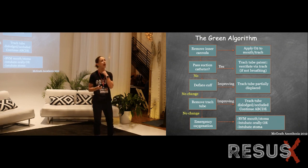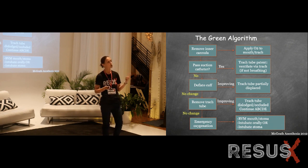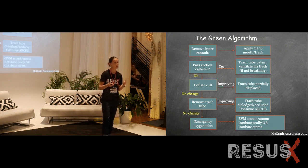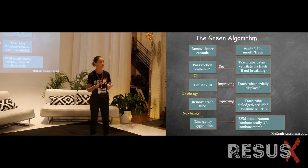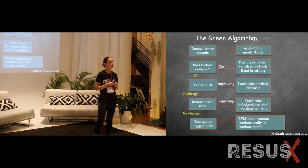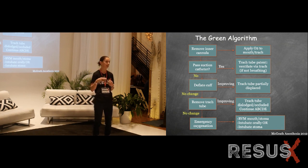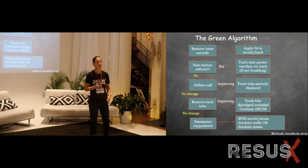How would you bag the stoma if the trach were dislodged? Two options. If you're in the ED, you may have access to a pediatric bag-valve mask — you can establish a seal and bag the stoma. The second option, which you should have anywhere, is an LMA. If you inflate a size 4 or 5 LMA, you can create a seal around that stoma.